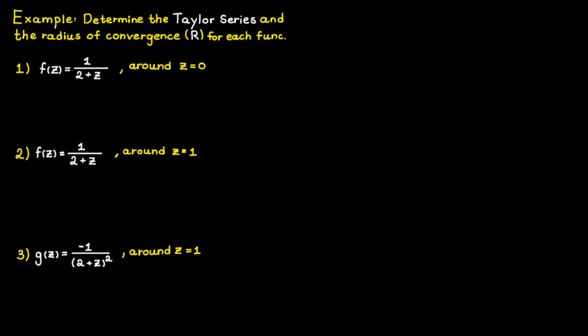In the following examples I would like us to determine the Taylor series and the radius of convergence for each function. Let's start with the first example. When doing these kinds of problems I recommend you start by drawing a graph and marking the important points: the center of the circle c naught, which is zero here, and the singularities of the function, which is minus two since that makes the function divide by zero. We can observe that the radius of convergence is going to be equal to two.